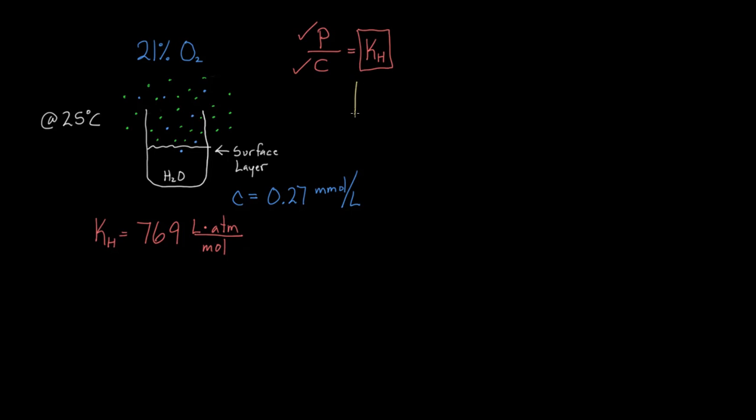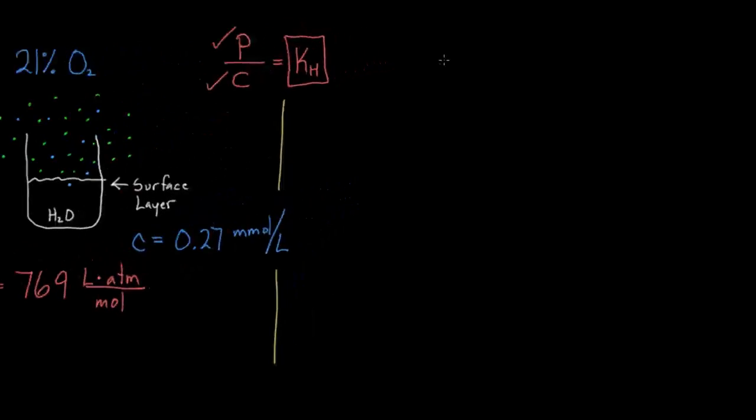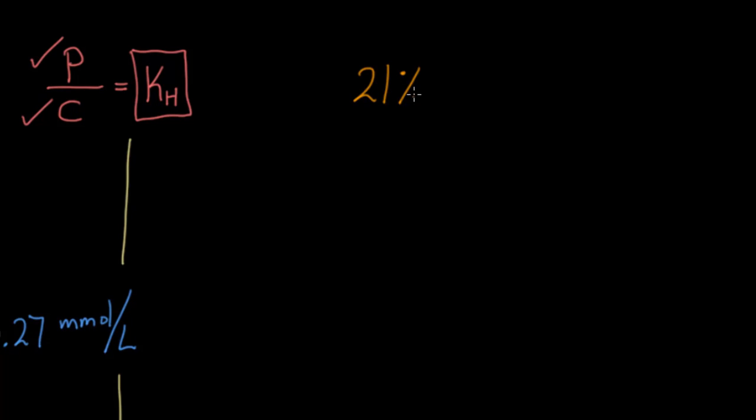But now I decide to kind of challenge myself, and I say, let's do this again. But instead of with oxygen, I'm going to create an environment that's 21% carbon dioxide, which is way more carbon dioxide than we actually have. But imagine I could actually do that. I actually find a way to crank up the carbon dioxide, and I do the exact same thing. I take a cup of water, and I keep it out at room temperature, 25 degrees Celsius. Let's see how much carbon dioxide goes into my cup.